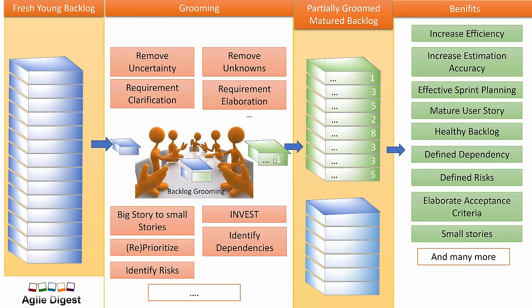When we talk about the 3C in a user story, the last C is for confirmation — that's the acceptance criteria. During grooming, we elaborate our acceptance criteria and make it understandable and feasible for the team to follow. Also, if there are very big stories, we can split them into multiple smaller stories. Smaller stories are definitely easier to manage, easier to estimate, and easier to execute. There are many other benefits you'll realize once you start doing grooming.